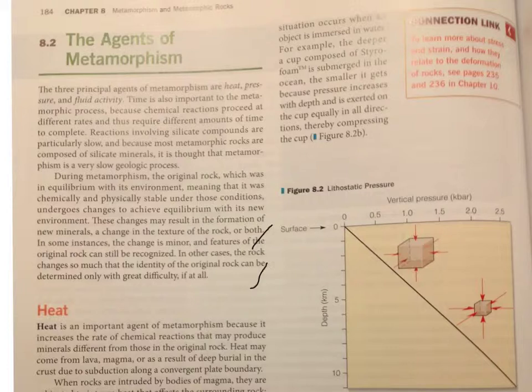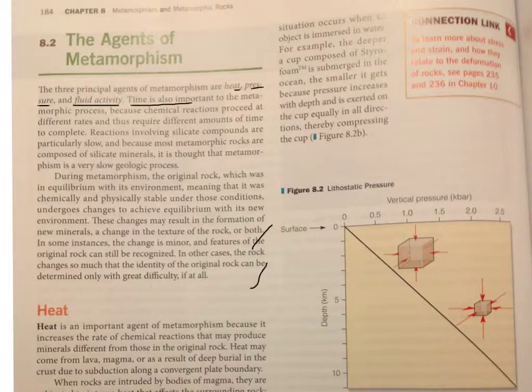Let's begin. The Agents of Metamorphism. The three principal agents of metamorphism are heat, pressure, and fluid activity. I'm going to underline those because they seem important. Time is also important to the metamorphic process because chemical reactions proceed at different rates and thus require different amounts of time to complete. This seems important as well.